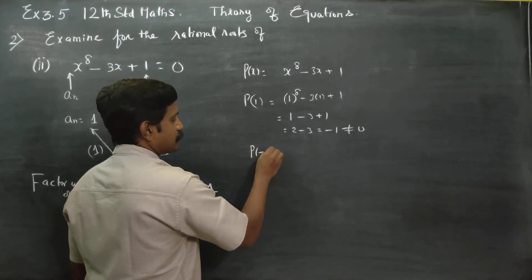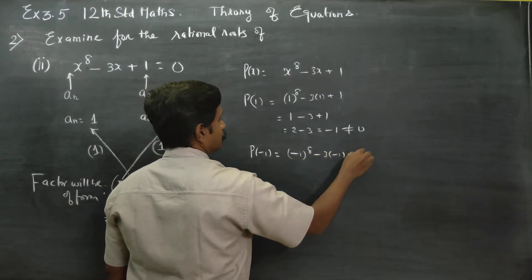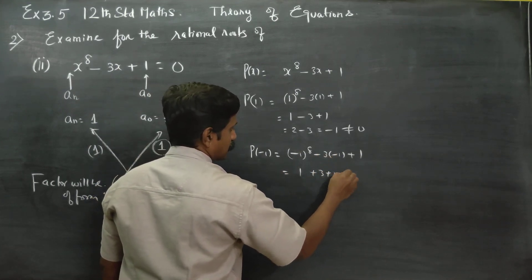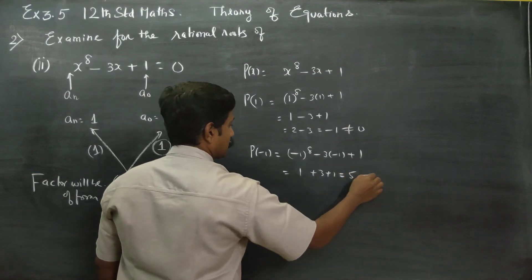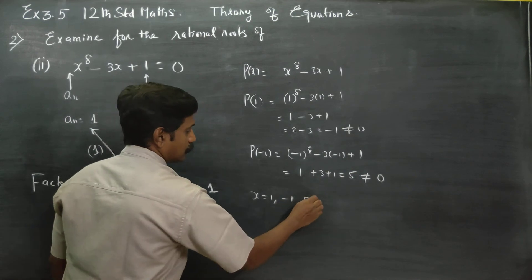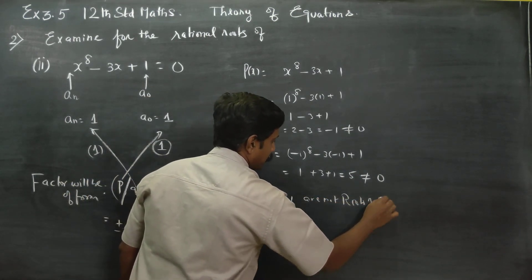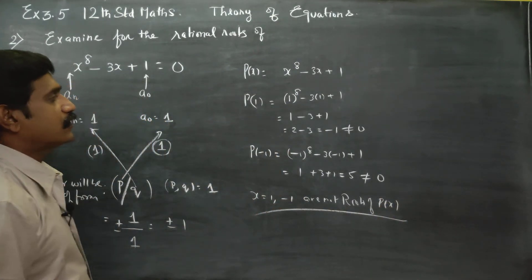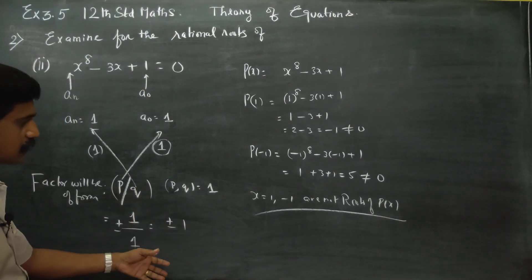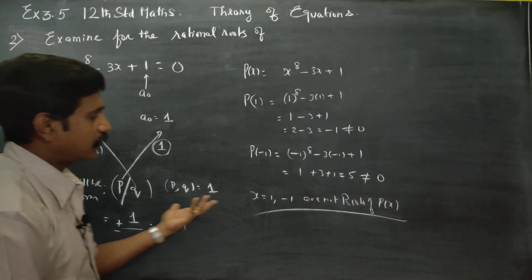Now try P(-1). Then (-1)^8 - 3(-1) + 1 = 1 + 3 + 1 = 5, not equal to 0. Therefore, x = 1 and x = -1 are not roots of P(x). Since the possible rational roots don't work, there are no rational roots.